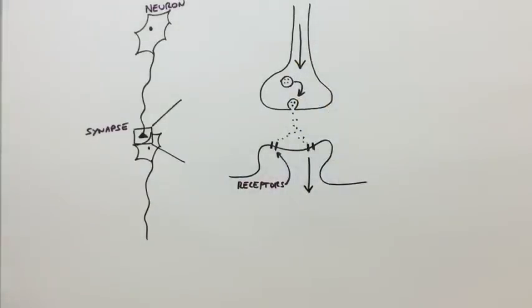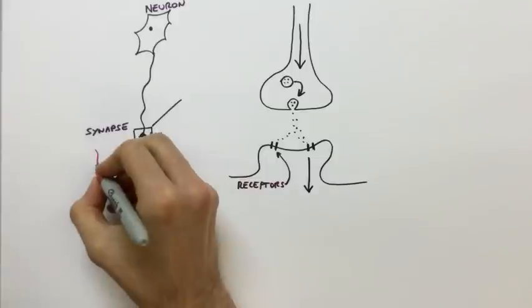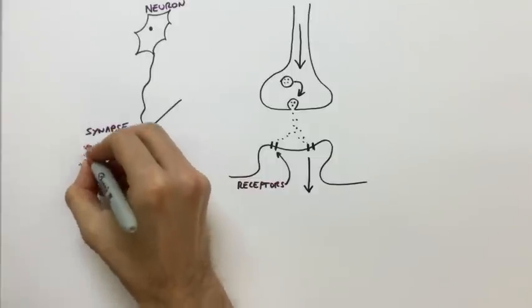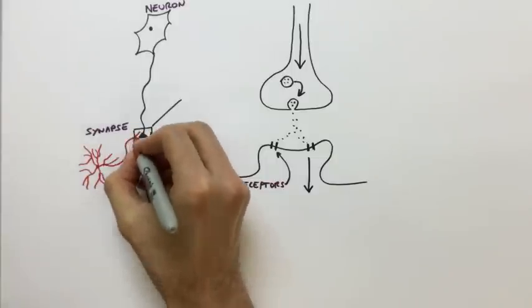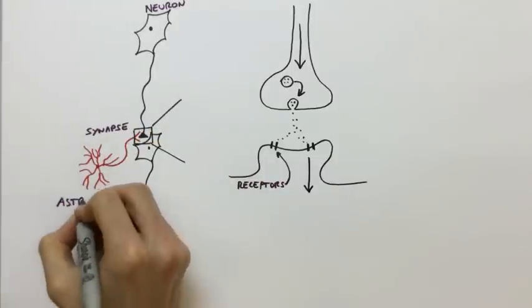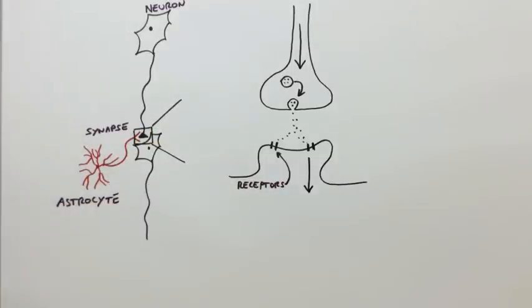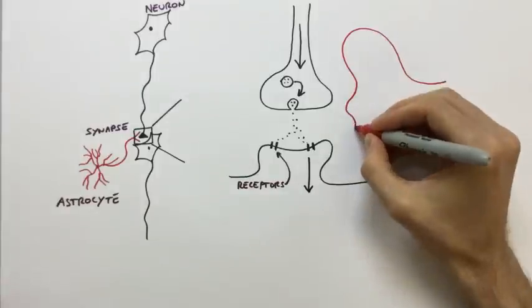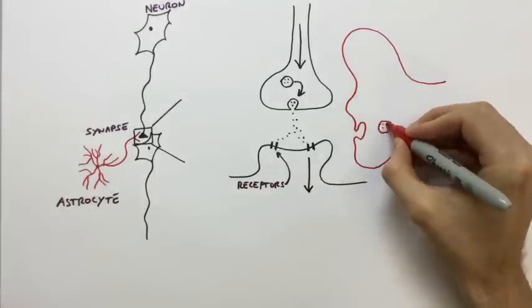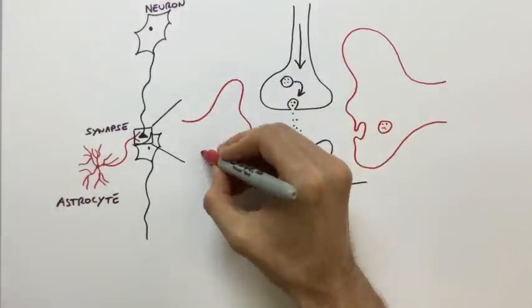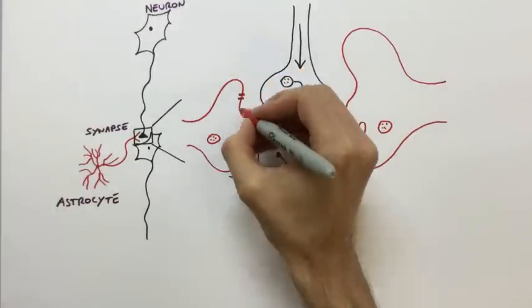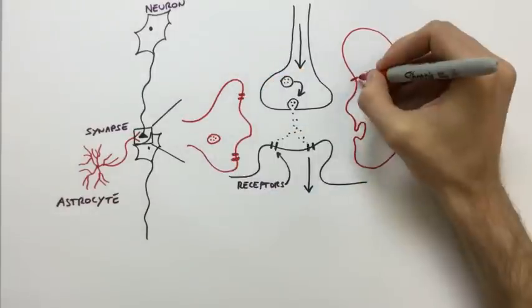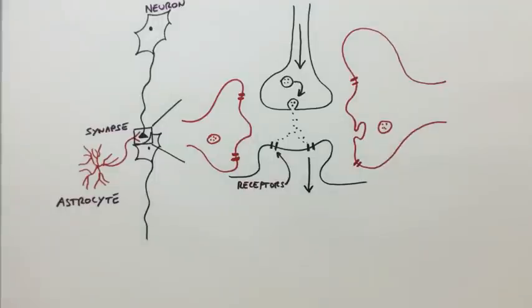Twenty years ago, scientists discovered that another type of cell that had been completely ignored in our investigation of the brain, called astrocytes, were part of the synapse. Like neurons, astrocytes release and receive transmitters.